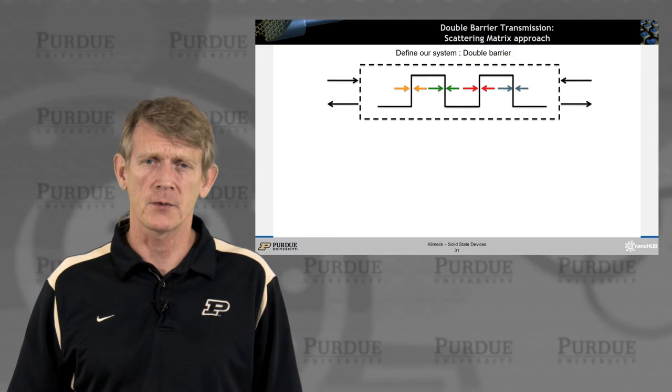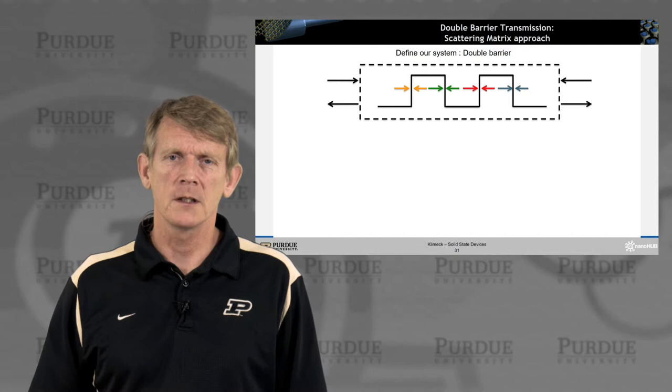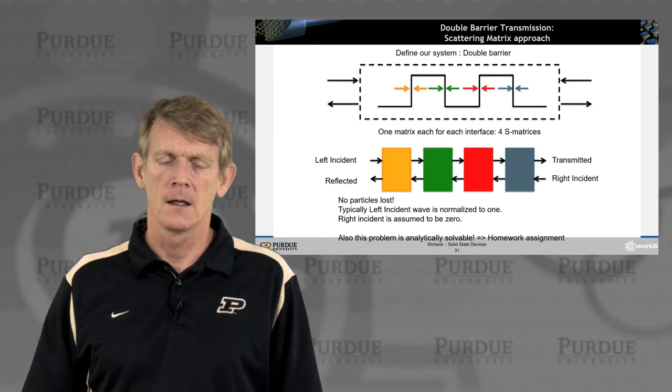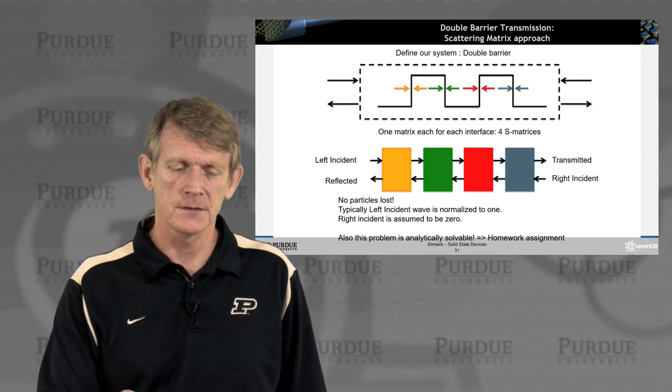The methodology is exactly the same as before, except instead of having just two interfaces in this structure, we now have four interfaces. And if you look at that using a scattering matrix approach, the methodology is really the same. Again, no particles lost. We inject particles from the left.